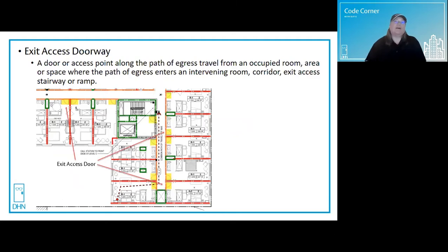Just a couple more definitions. An exit access doorway is a door or access point along the path of egress travel from an occupied room, area or space where the path of egress enters an intervening room, a corridor, an exit access stairway, or ramp. All of the doors that are highlighted are exit access doorways.